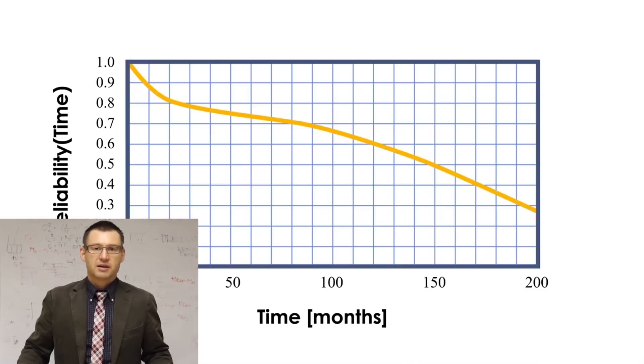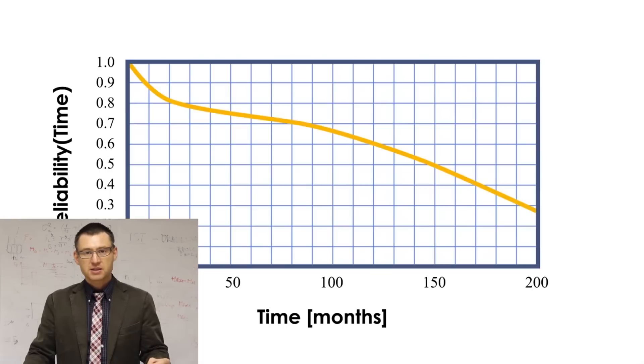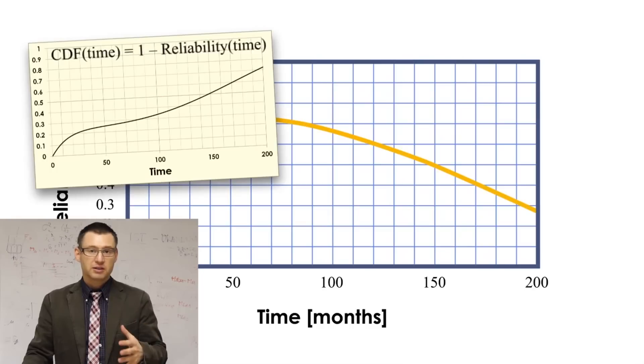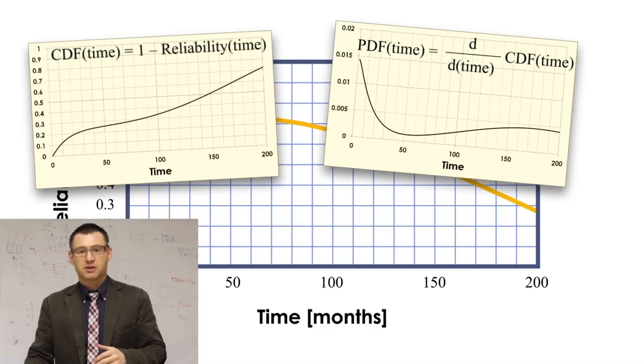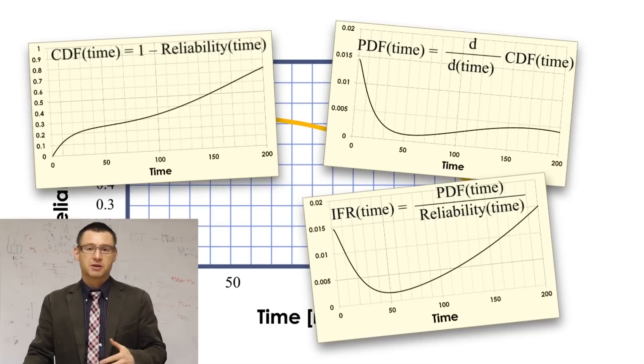Statistically speaking, the presented reliability function is one of possible representations of the distribution function. If we estimate the reliability function, we can easily picture it as, for example, the cumulative distribution function, or as the probability density function, or the famous bathtub curve, officially known as the hazard function or the instantaneous failure rate.